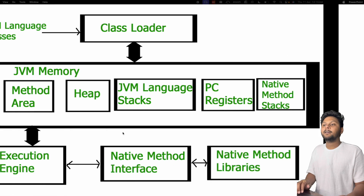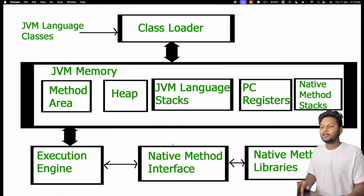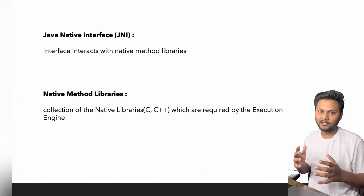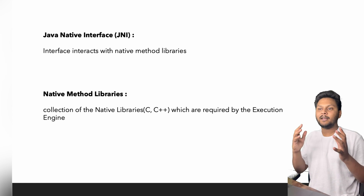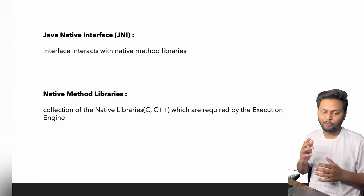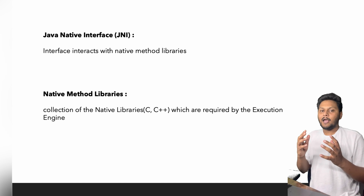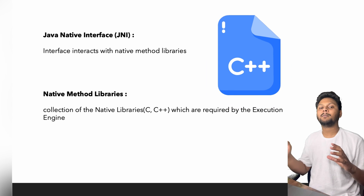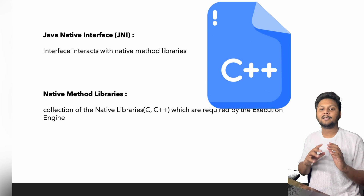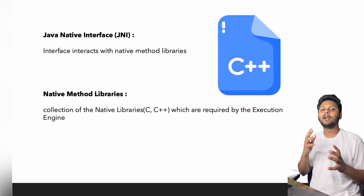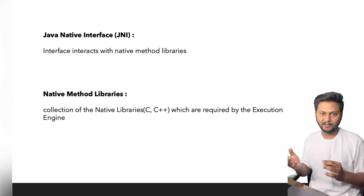At the end of the architecture we have the Native Method Interface (JNI — Java Native Interface) and native method libraries. JNI is an interface used to interact with native method libraries. These libraries are required by JVM to interpret code written in other languages — for example, if we want to integrate C or C++ code into Java, the execution engine requires these native method libraries.